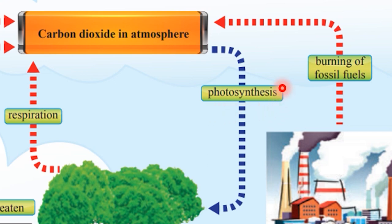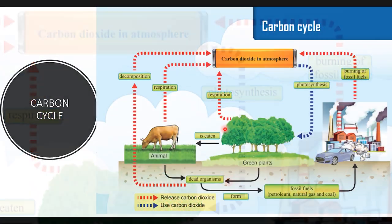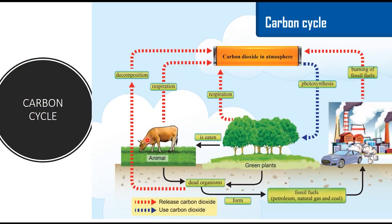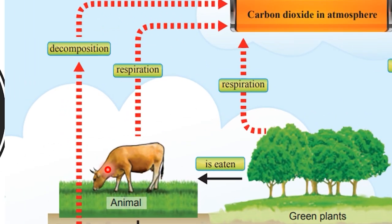In other words, during the photosynthesis process, carbon dioxide is taken from the atmosphere. When the plants and animals die, they decompose. Decomposition caused by bacteria and fungi in the soil releases carbon dioxide and returns it to the atmosphere.